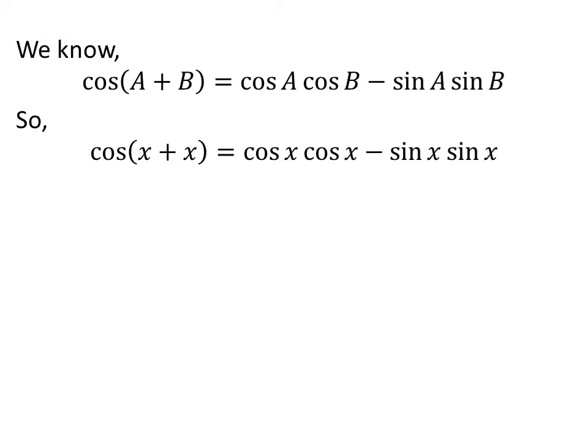If A = x and B = x, then cos(x + x) = cos(x)cos(x) - sin(x)sin(x).